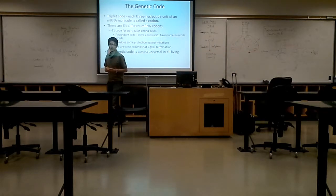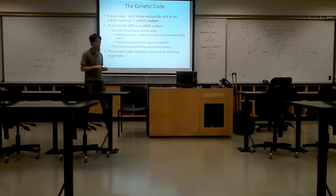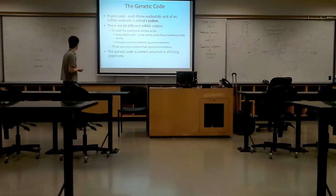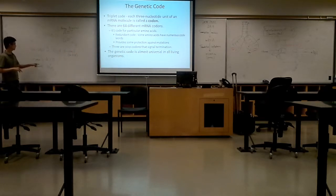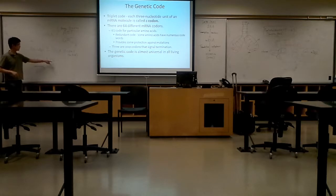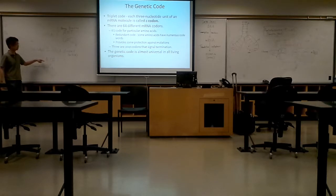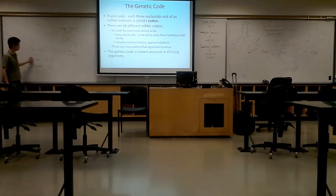We talked about the genetic code. An example is that if you have three nitrogenous bases arranged in A, U, G in this sequence, we can call it a triple code. But on the mRNA, we call it a codon.